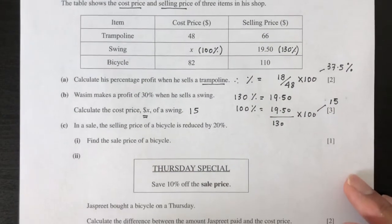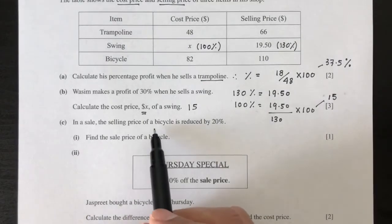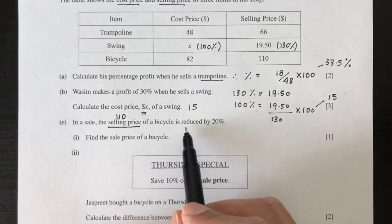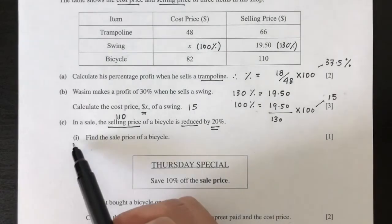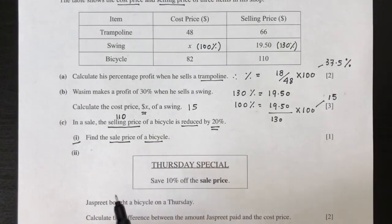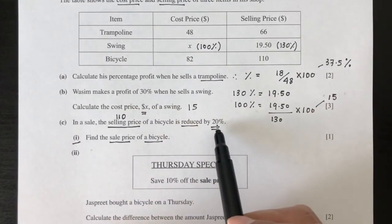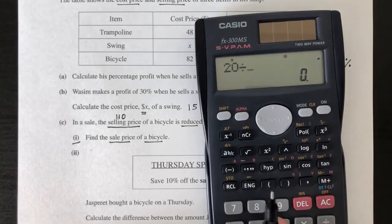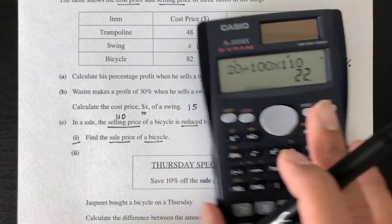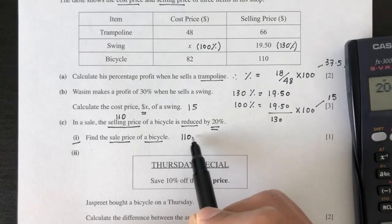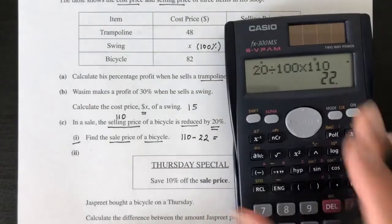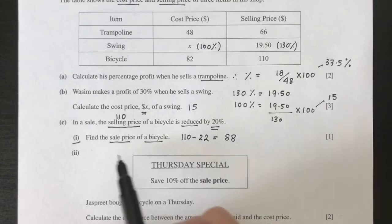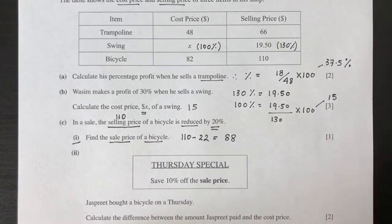Now for part C, in a sale, the selling price of the bicycle is 110. This price of the bicycle is reduced by 20%. Part 1: find the sale price of a bicycle. If the price here is reduced by 20%, what is the new price? You have to find the reduction first, which is 20% times 110, that's $22 of reduction. So initial price minus $22 for discount, that should be $88. That's the sale price of the bike after this 20% reduction.